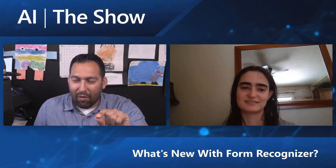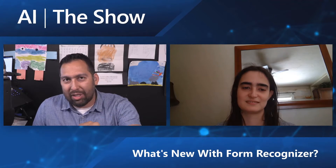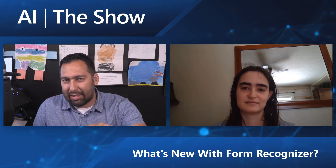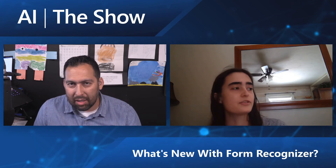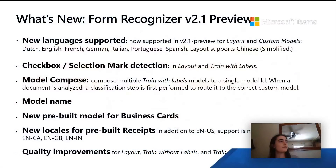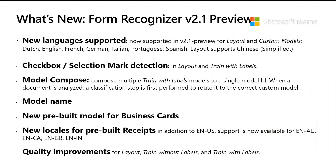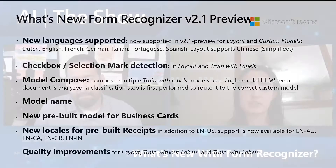For each of those languages, when we add new languages we're really adding new OCR support. So now you can train a custom model for any of those languages, and you can train it to recognize key-value pairs across those languages.